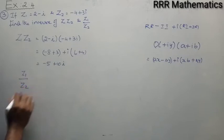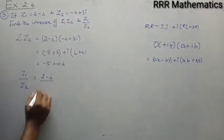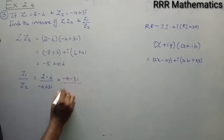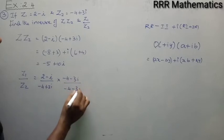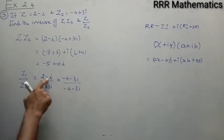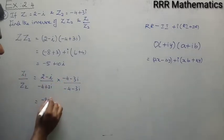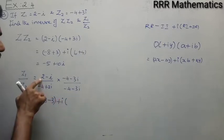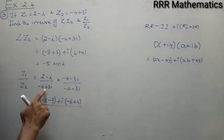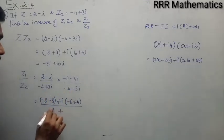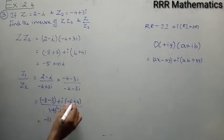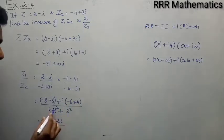Now find z1 divided by z2: (2 minus i) divided by (minus 4 plus 3i). Since i is present in the denominator, multiply and divide by the conjugate. The conjugate of minus 4 plus 3i is minus 4 minus 3i. Real into real: 2 into minus 4 equals minus 8. Minus imaginary into imaginary: minus 1 into minus 3 gives plus 3. Plus i times real into imaginary: 2 into minus 3 equals minus 6; imaginary into real: minus 1 into minus 4 equals plus 4. The denominator is the product of the complex number and its conjugate — sum of squares of real and imaginary parts: 16 plus 9 equals 25. So z1/z2 = (minus 11 minus 2i) divided by 25.